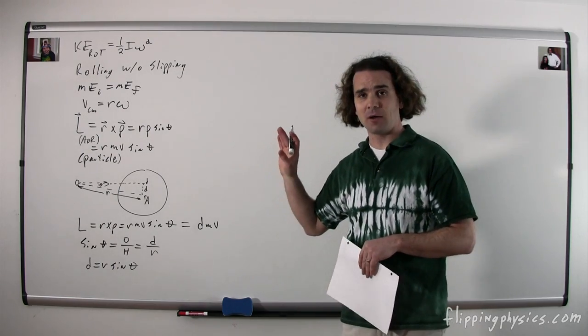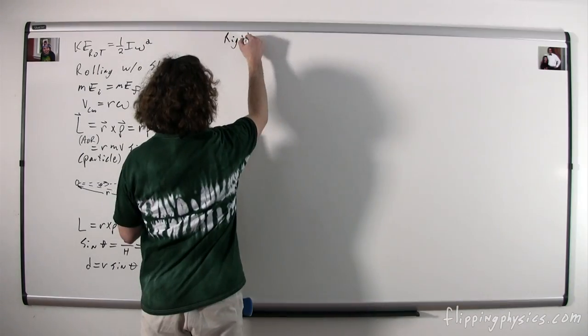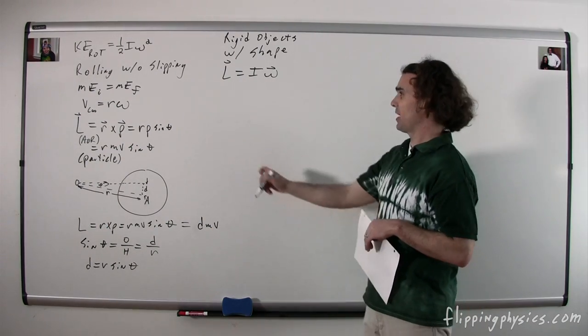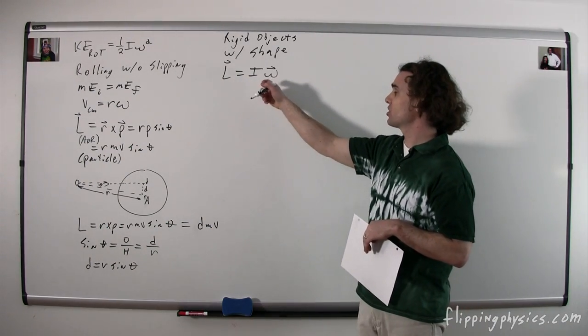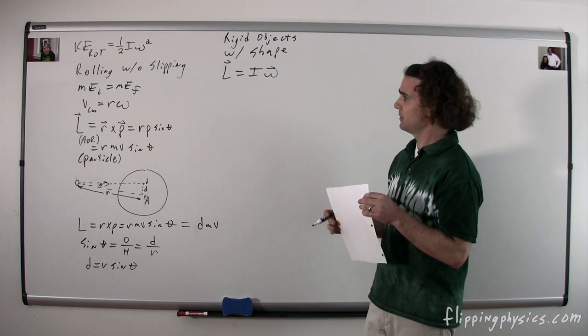For rigid objects with shape, the angular momentum is equal to the moment of inertia times the angular velocity.